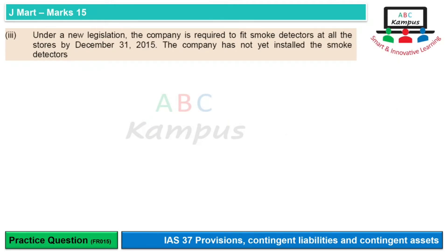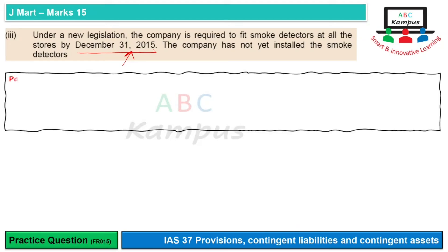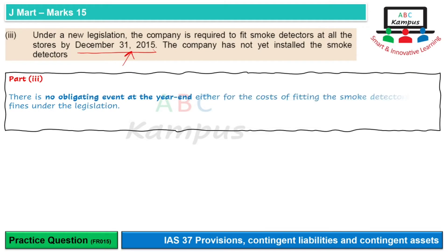Next: Under new legislation the company is required to fit smoke detectors at all stores by December 31, 2015 — yaani year end ke 6 month baad. The company has not yet installed smoke detectors. Koi humari year end pe obligating event nahi hai — cost of fitting the smoke detectors ya fines nahi honge, kyunki jo date hai wo future ki date hai. Hum 31st December tak agar nahi install karte toh fine lag sakta hai, lekin wo future mein lagega. Abhi humari koi present obligation nahi hai, isliye koi provision recognize nahi karenge.